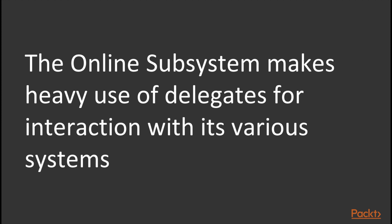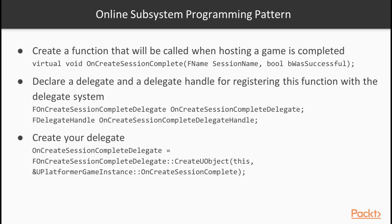To access the functionality provided by the various Online Subsystem interfaces, we need to make heavy use of delegates. The general pattern for gaining access to an online service goes something like this. First, you're going to create a function that will be called when your specific action is completed — in this case, hosting a game. You'll then declare a delegate and a delegate handle for registering this function with the delegate system.